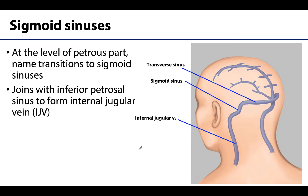The last dural venous sinuses to discuss in greater detail are the sigmoid sinuses, of which there are two — a right and a left. At approximately the area of the petrous part of the temporal bone, the transverse sinus curves abruptly and heads inferiorly. At this point, the name changes to the sigmoid sinus. These sinuses join with the much smaller inferior petrosal sinuses to form the internal jugular veins at the level of the jugular foramina.